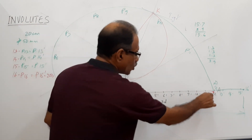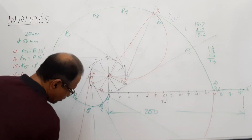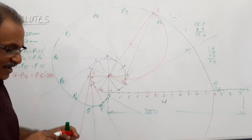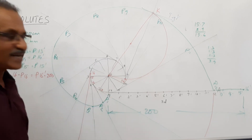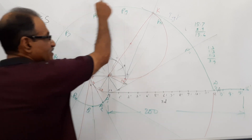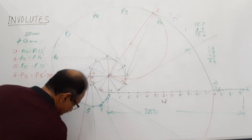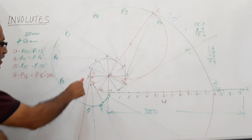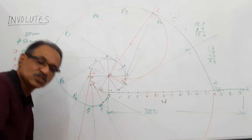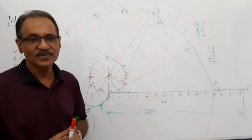So you get the point. Go on adding and extending the curve. The curve will come and end somewhere here — which is not possible within the limit of this board. So the curve starts from here, goes through one circumference, and ends at the tangent at point 16, which is P16. Very interesting.